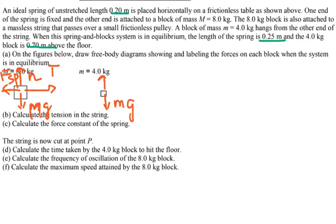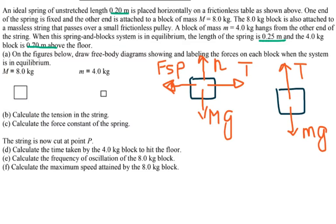When drawing the free body diagram on the AP exam, make sure the length of the normal force arrow equals the length of the gravity arrow, since they balance and cancel. Also make sure the length of the tension arrow equals the length of the spring force arrow, because the blocks are in equilibrium — so spring force equals tension. The tension here equals the tension on the hanging block, and its mg also equals the tension magnitude.